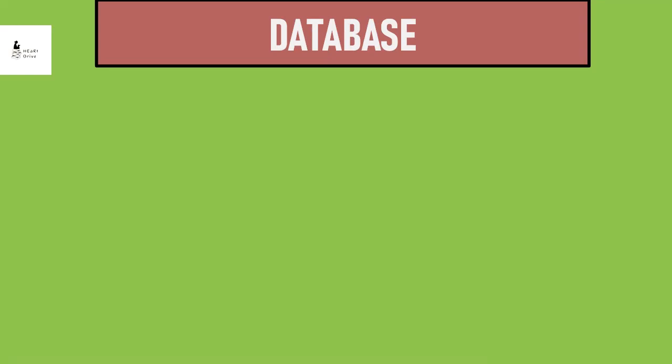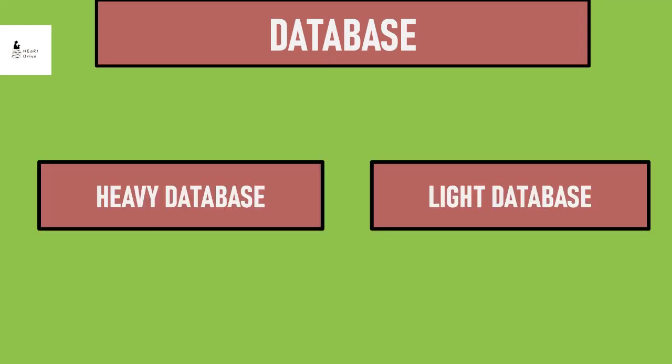In general, databases are divided into two types: heavy and light database. Heavy database doesn't work well with networks, so light database is used as a web database.